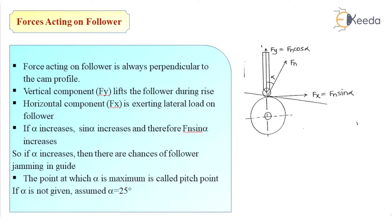If alpha increases, sin alpha increases and therefore Fn sin alpha will also increase. So if we can see, as alpha increases there are chances of follower jamming in the guide.